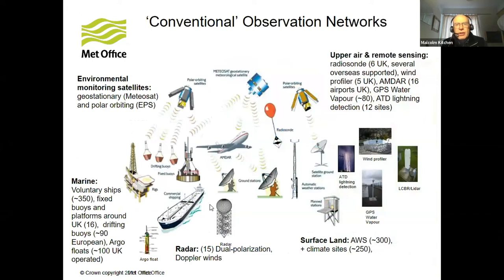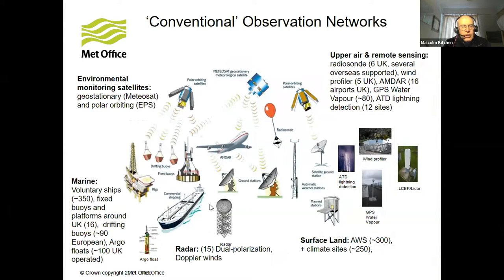What we do have is what I describe as conventional observing networks, which have served us well since the dawn of meteorology — 150 years. In some cases we've had rain gauges and thermometers. But nowadays we've got a whole lot of other things as well: satellites, radars, lots of remote sensing instruments. But all these are infrastructure-heavy and very expensive to both install and to run.